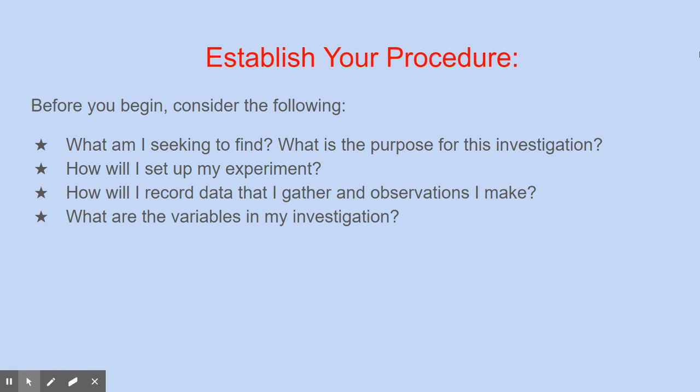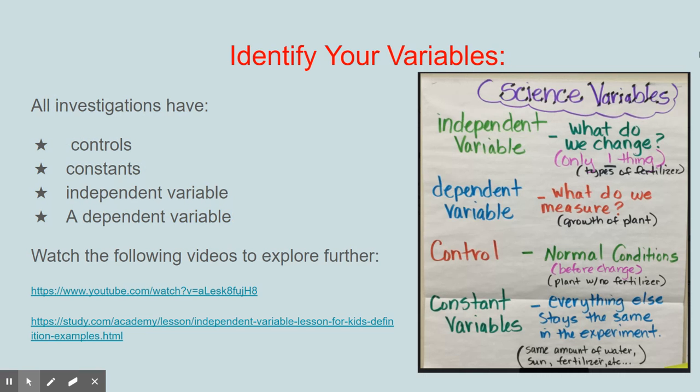And then the next really big thing you need to understand is what are the variables in your investigation. Every investigation has controls, constants, an independent variable, and a dependent variable. You have to know what each of these are in your investigation before you can conduct the investigation, gather data and observations from the investigation, and translate that all into a scientific finding about the investigation you did.